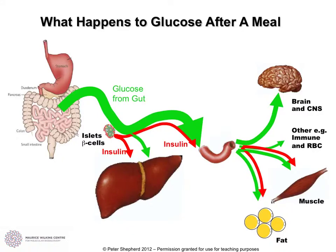Firstly, glucose is basically being absorbed from the gut into the bloodstream. It will be distributed — this here is meant to be an artery — and it distributes that glucose through the bloodstream to the brain and the central nervous system, to other cells like red blood cells and immune cells, into our muscles and down to fat cells as well.